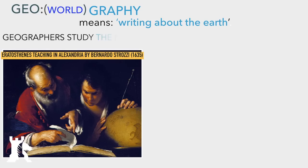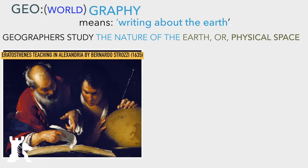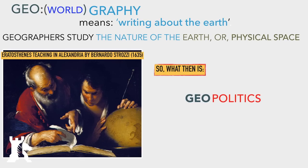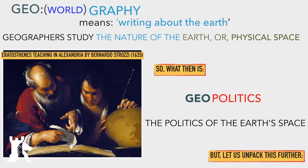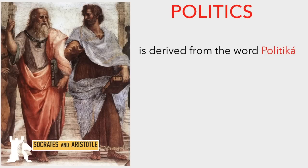So looking at the etymological meaning of geography: it fundamentally means writing about the earth. What geographers do is study the nature of the earth or of the physical space of the earth. By looking at geography through its component parts, it gives us a guide towards developing a functional definition of geopolitics. A functional definition of geopolitics would imply that geopolitics is the politics of the geo — or the politics of the world.